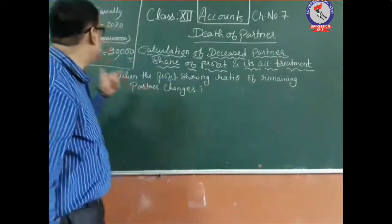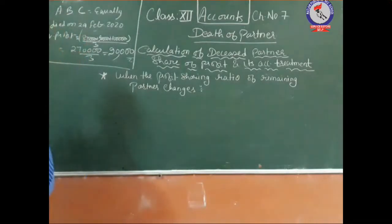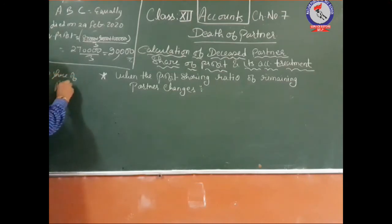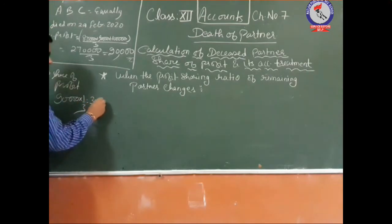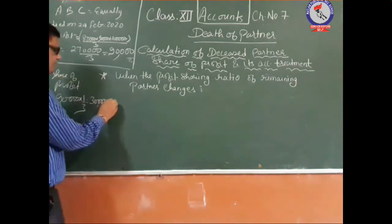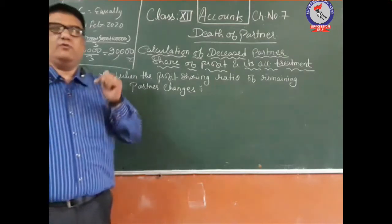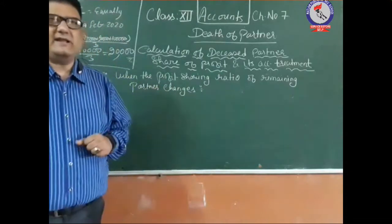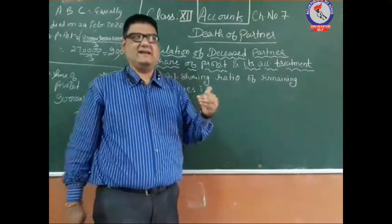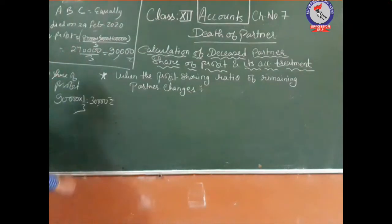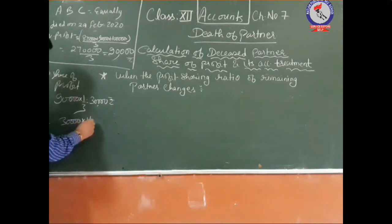C's share of profit from the average profit: C's share is 90,000 × 1/3 (since they are equal partners), which equals 30,000. However, this 30,000 rupees is for the full year, but in this accounting year C died on 29th February, meaning he was in the business for only 11 months.